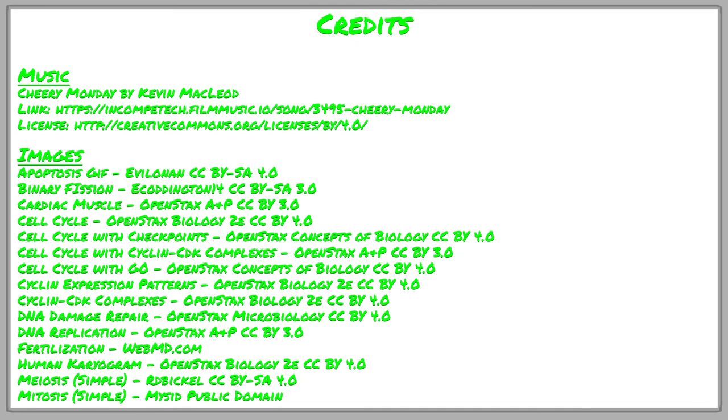As you can see, the cell cycle is a highly regulated, orderly process for determining when a cell is going to divide and when it's not. This process needs to be tightly regulated to prevent cells from dividing at inappropriate times — preventing the death of unicellular organisms and preventing tumor formation and oncogenesis in multicellular organisms. In our next video, we're going to talk specifically about the processes of mitosis and meiosis, their differences and similarities. Thank you so much for tuning in.